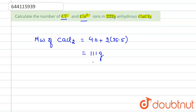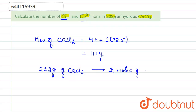We need to find the number of Ca²⁺ and Cl⁻ ions. Since 222 grams of CaCl₂ is given, and the molecular weight is 111 grams, 222 grams contains two moles of CaCl₂.